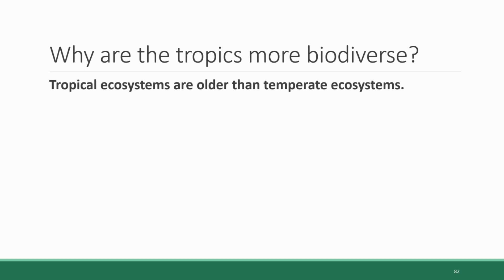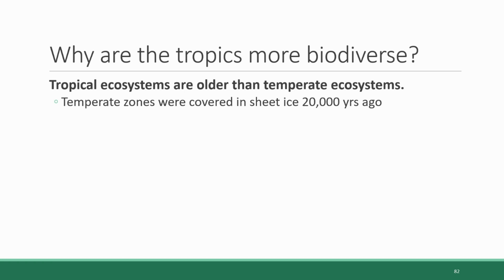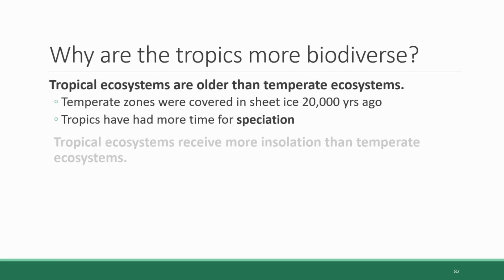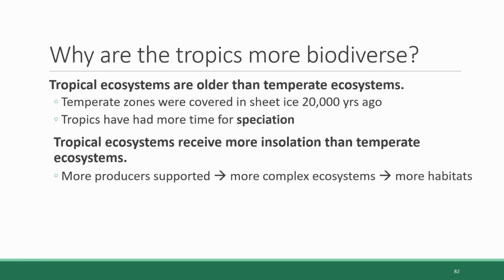Scientists have several hypotheses as to why this is the case. One has to do with the fact that tropical ecosystems are older than temperate ecosystems — they have existed in their current state for longer. That's because 20,000 years ago, the temperate zones of North America were covered in sheet ice, meaning there was no ecosystem there at all. So the tropics have had a longer time for development, meaning more opportunities for speciation — the evolutionary process of new species emerging. Another hypothesis has to do with tropical ecosystems receiving more insolation. Equatorial regions get more direct sunlight, which may support more producers, meaning plants, which creates more complexity in ecosystems with more different habitat niches that organisms can evolve and adapt to.